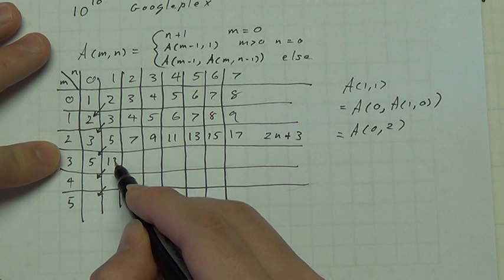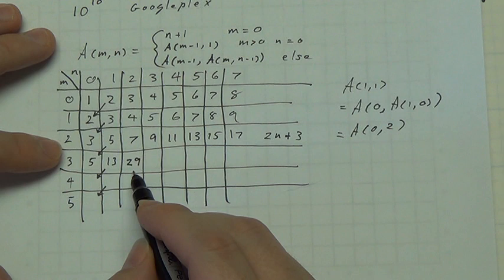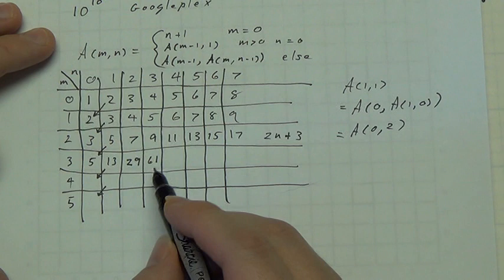Now, 5, that's 13. 13, twice 13 plus 3 is 29, right? 26, 27, 28, 29. Twice 29, well, twice 30 is 60, plus 3 is 61. Minus 2, plus 3. Twice 61,